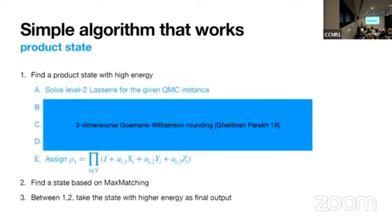All right, so the first part comes from one of the previous work, the first work actually on this problem, Gharibian-Parekh 2019. So solve the level two lasserre for our instance, and round some three-dimensional version of Goemans-Williamson. So project a vector onto three-dimensional space instead of one-dimensional space and normalize it. And use the final three-dimensional vector to have a product state.